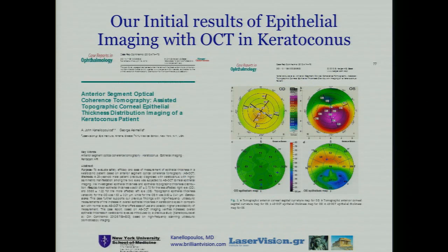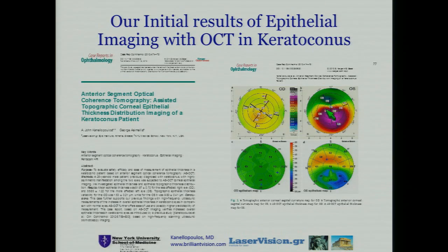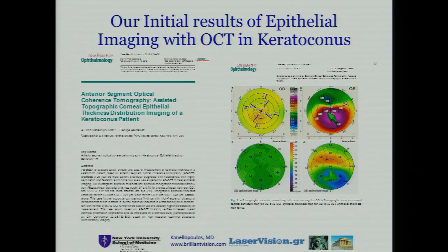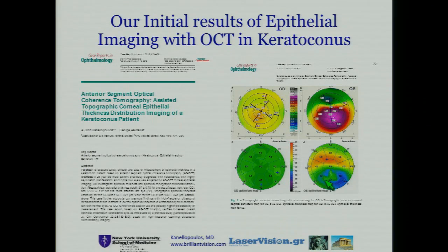Our initial results show a study where we can see the correlation between the slit-lamp imaging and the OCT imaging. Here is a typical example of a patient with keratoconus — as you can see, the areas that are steeper also correlate with the images of the epithelial mapping.